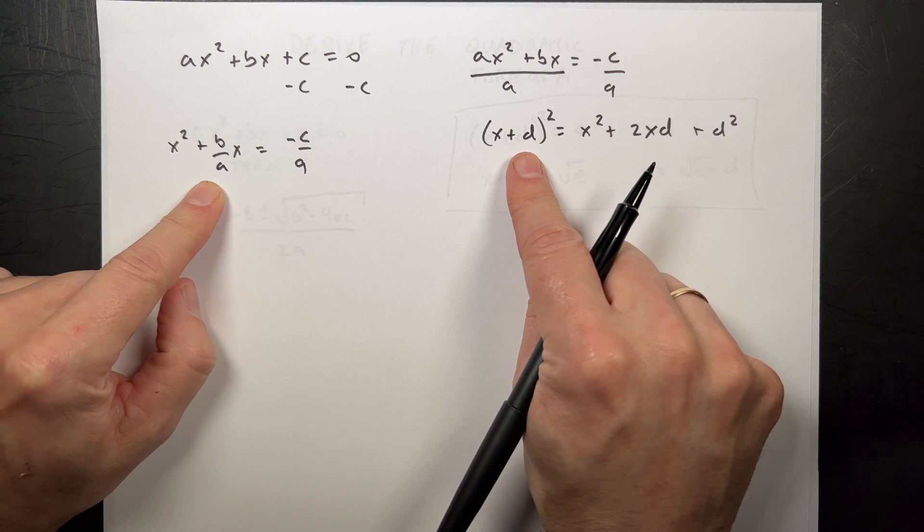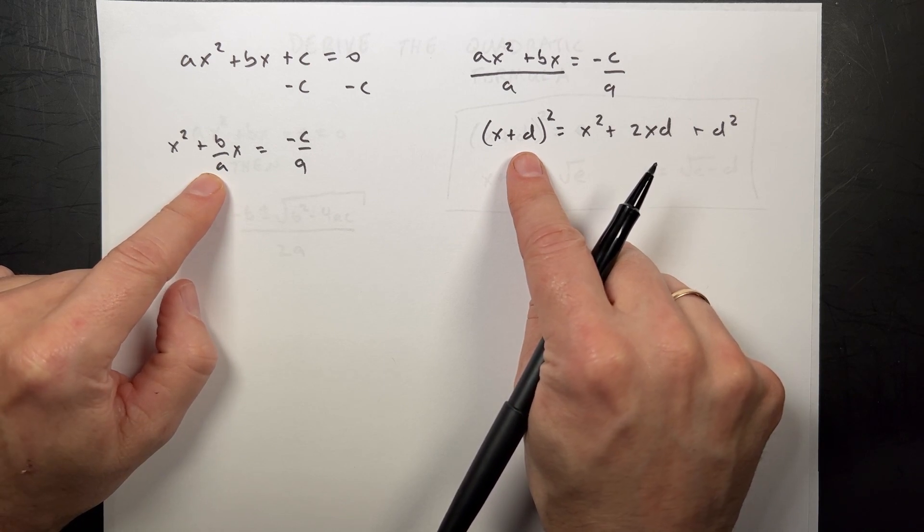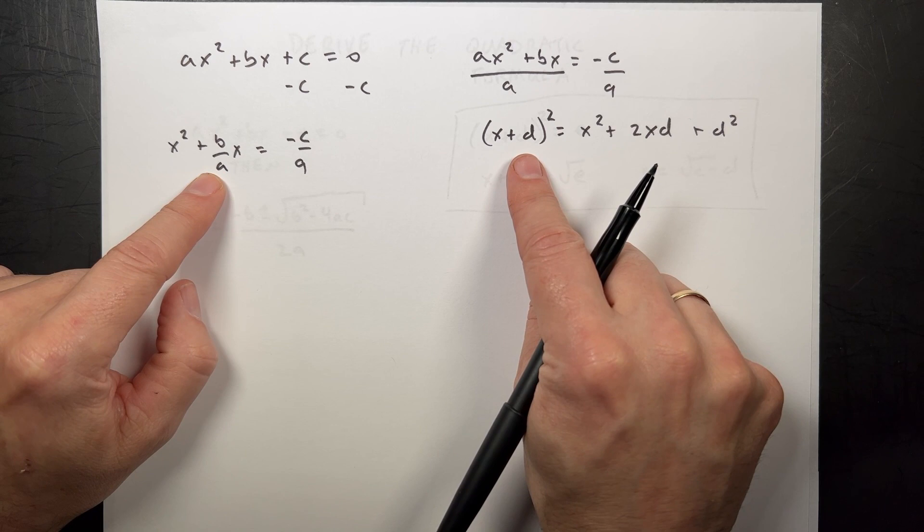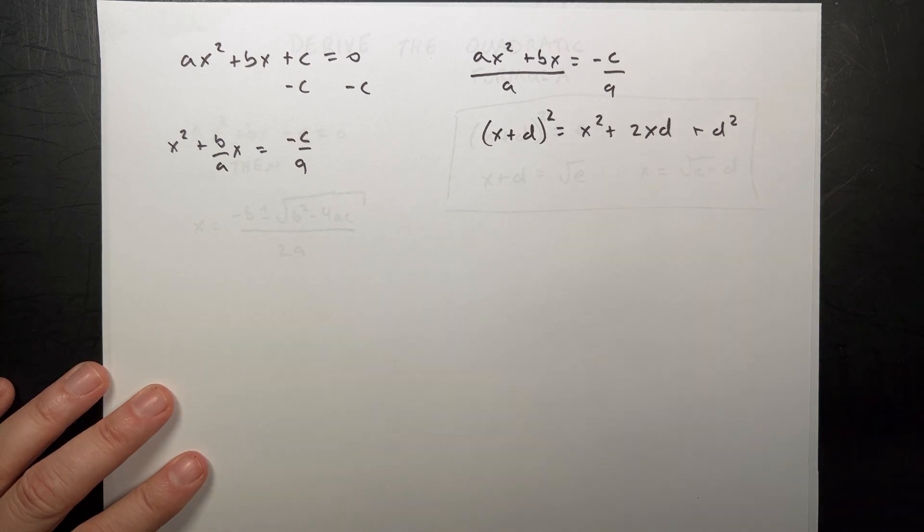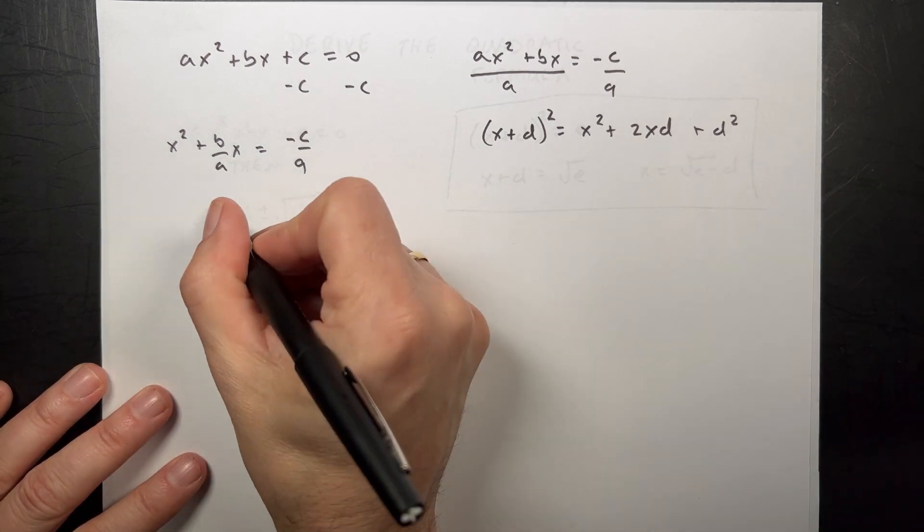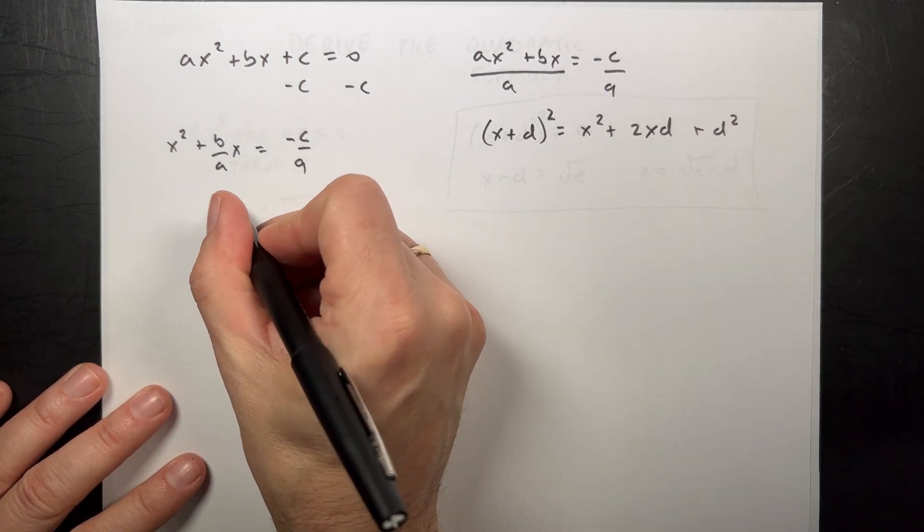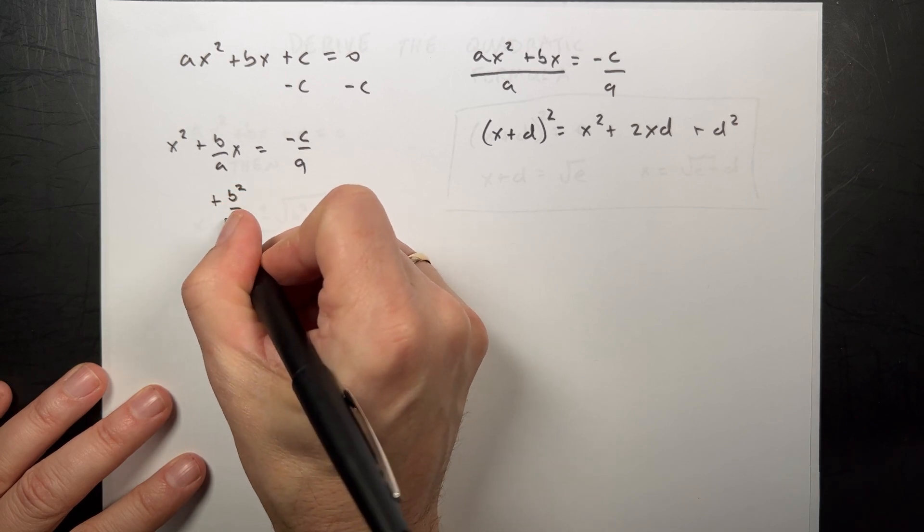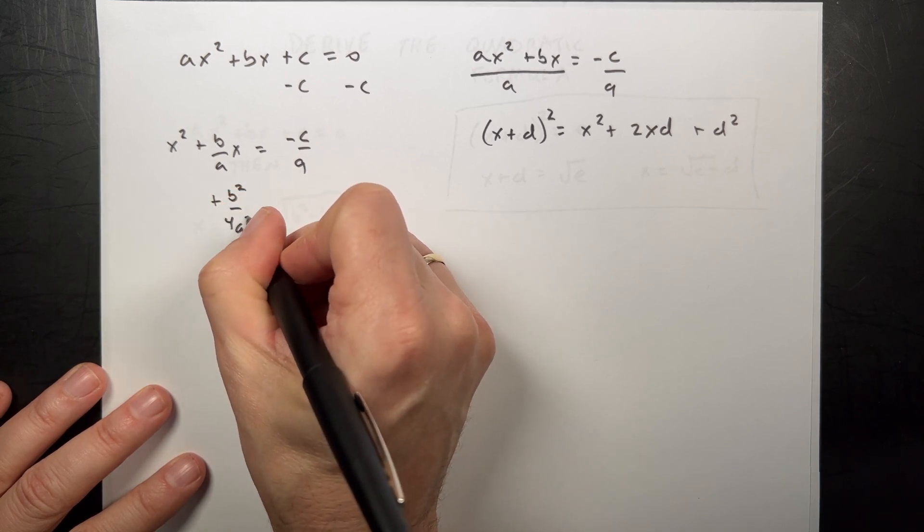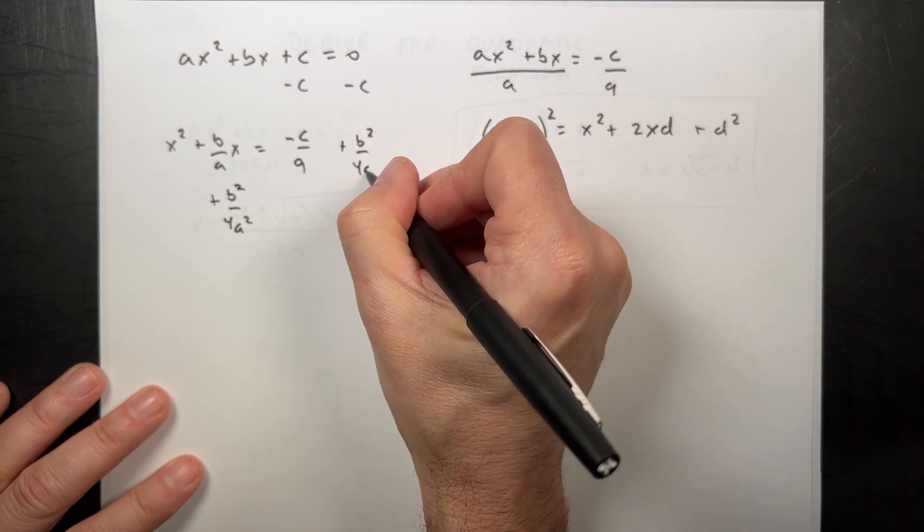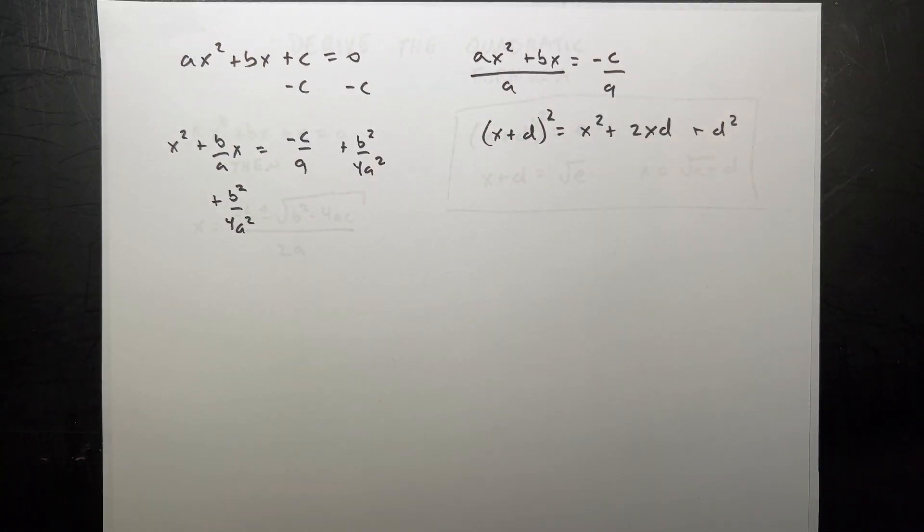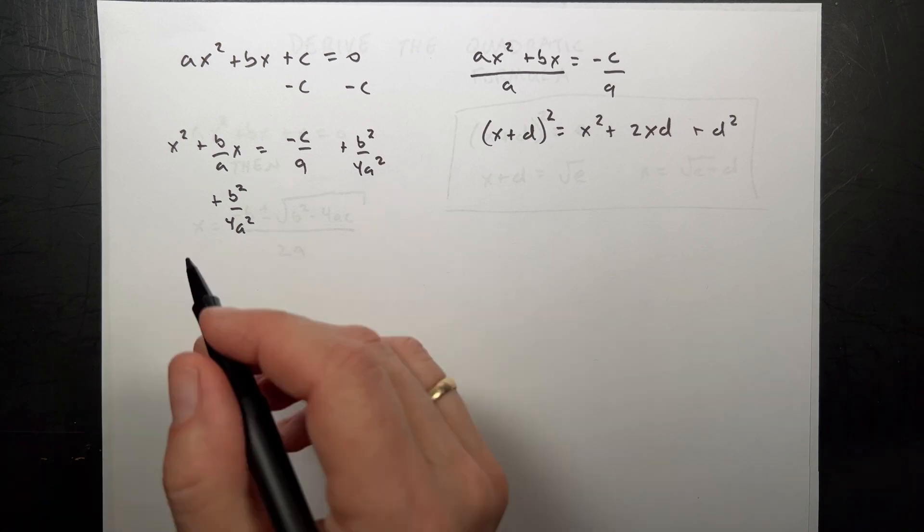Right? So I'm going to go ahead, and then I need to, and I also need to have this d squared term over there to be d squared. So if I add the following to both sides, let's add plus b squared over 4a squared plus b squared over 4a squared. You can do whatever you want to the equation as long as you do the same thing to both sides.